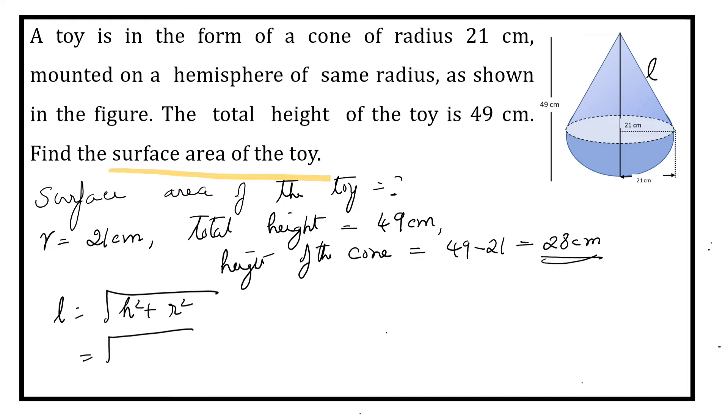Here H is 28² plus R is 21². So 28² is equal to 784. 21² is equal to 441. This is equal to 4 plus 1 that is 5, 8 plus 4 that is 12, 7 plus 4 is 11. And this is equal to 35. So slant height of the cone is 35 cm.